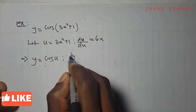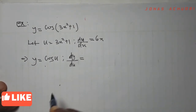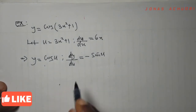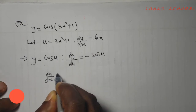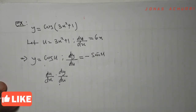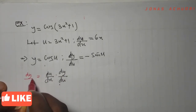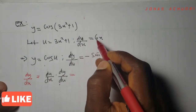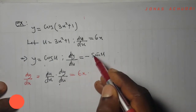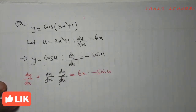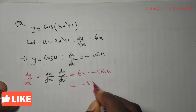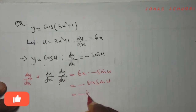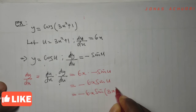We differentiate again, this time dy/du. When you differentiate cos u, you get negative sin u. So multiplying du/dx by dy/du, the du cancels and we have dy/dx. du/dx is 6x and dy/du is −sin u, giving us −6x sin u. Our u is 3x² + 1, so the derivative is −6x sin(3x² + 1).